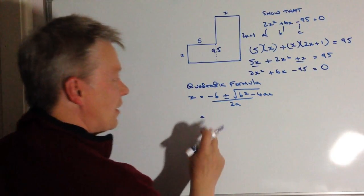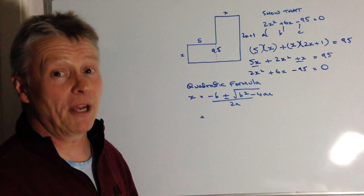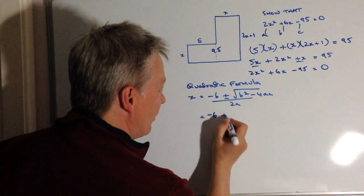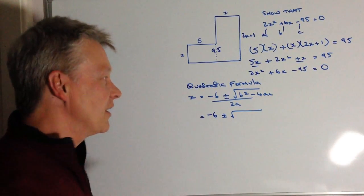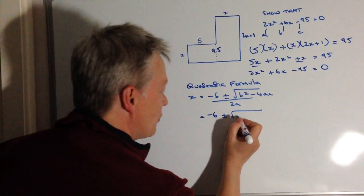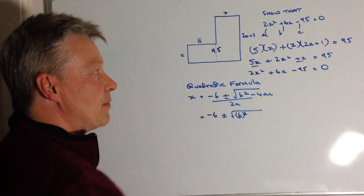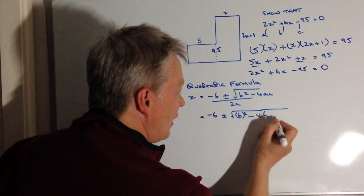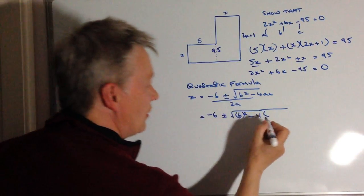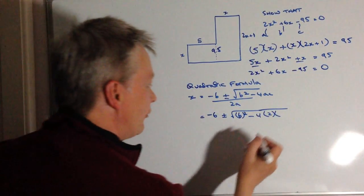So the first thing is I've got minus B. Well, at the moment, it's 6, so I'm going to make it minus 6. And that's plus or minus the root of. Now, this is where it gets a little bit complicated, and I suggest again you use the brackets. So I'm going to put 6 squared, which is the first bit, minus 4. And then I'm going to minus 4 times A, which is 2. And then be very careful here, it's C, which is minus 95.